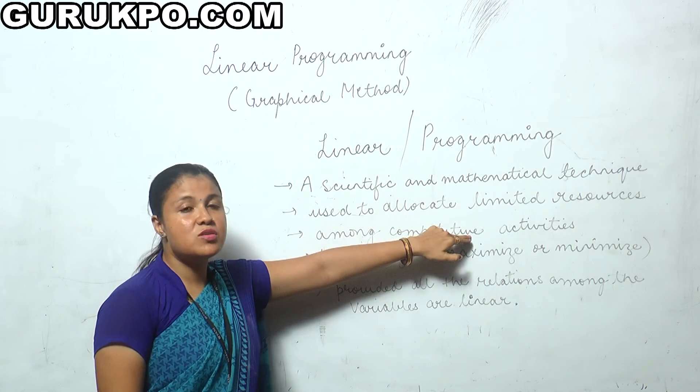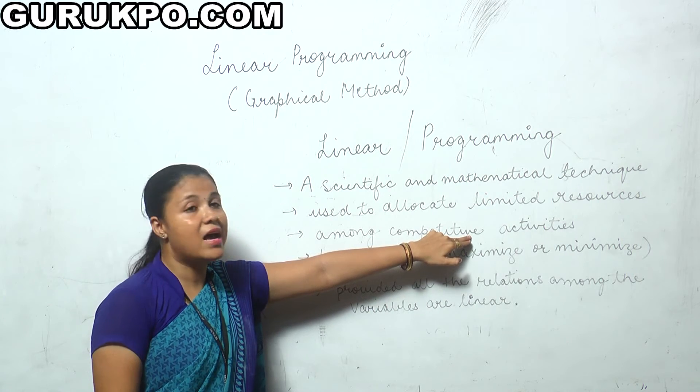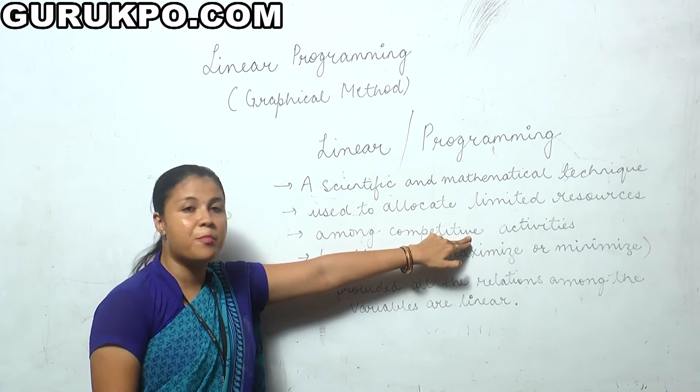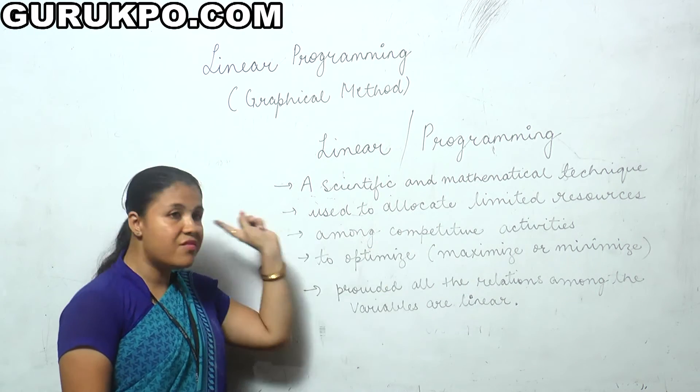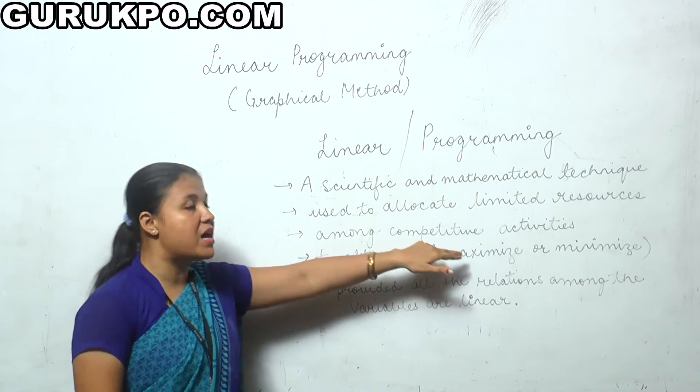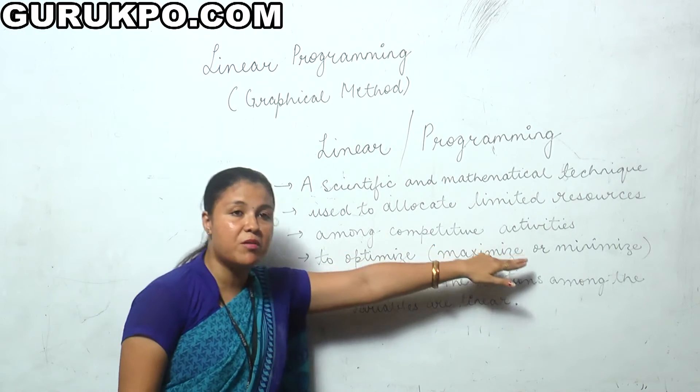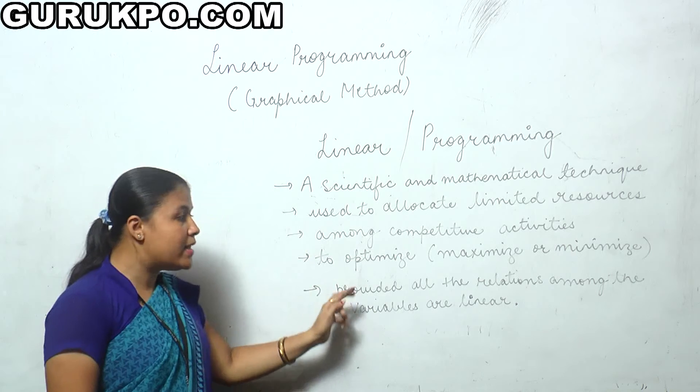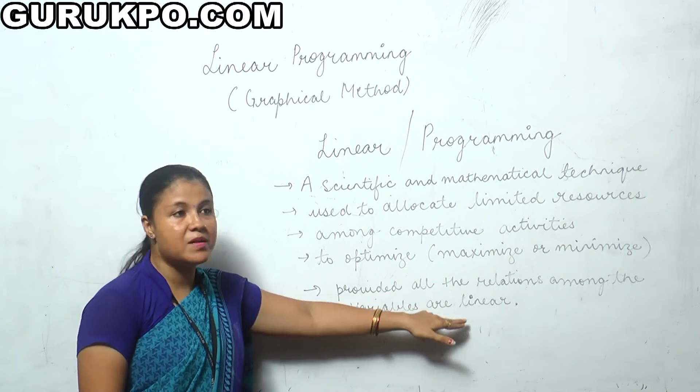Among competitive activities, resources should be allocated to the most competitive activities. The objective is to achieve maximum profit or minimum cost, provided all relations among the variables are linear.